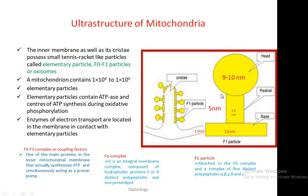The F1 particle is divided into three parts: head, pedicle or trunk, and base. The head region is 9 to 10 nanometers in diameter, the pedicle region is 3.5 nanometers in diameter and 5 nanometers long, and its base is 1.5 nanometers in width and 11 nanometers long. The F1 complex is a complex of five distinct polypeptides called alpha, beta, gamma, delta, and epsilon. A mitochondrion contains about 10⁴ to 10⁵ elementary particles.